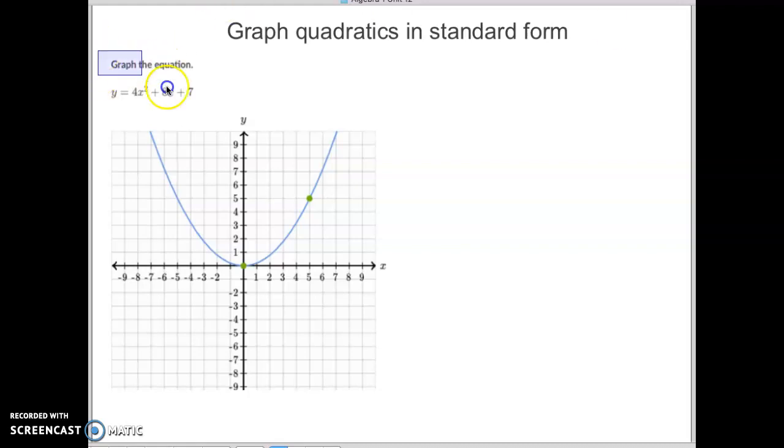You'll notice that these are given to you in standard form and they're going to give you a graph. This is not the graph you're looking at. You have this vertex dot right here and then this is going to end up being your y-intercept dot right up here. So you have a vertex dot and a y-intercept dot and we've got to position those in the correct spot.